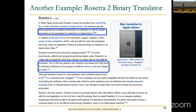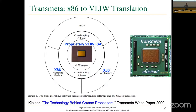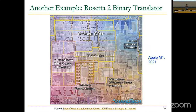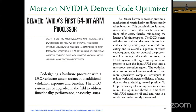What has been successful is Apple's Rosetta, which translates x86 to ARM. NVIDIA Denver did something similar using Dynamic Code Optimization (DCO) software. NVIDIA stated that co-designing a hardware processor with dynamic code optimization software creates additional validation exposure and benefits, and the DCO system can be upgraded in the field to address functionality, performance, or security issues without changing the hardware underneath.